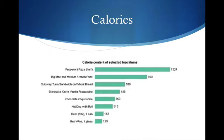Now talking about Calories — these are big C Calories, which is huge. Pepperoni pizza, half of it, that's like 13,024 big C Calories — a lot of energy. A Big Mac and medium french fries, about 820. A Subway tuna sandwich on wheat bread, about 530. A Starbucks vanilla frappuccino, 439 — that's a lot for a drink. A large chocolate chip cookie, about 350. Beer, 153. A hot dog with a roll, 315. So, different calorie counts.